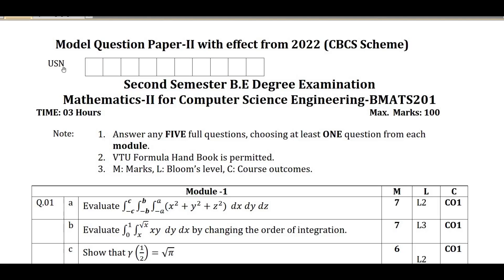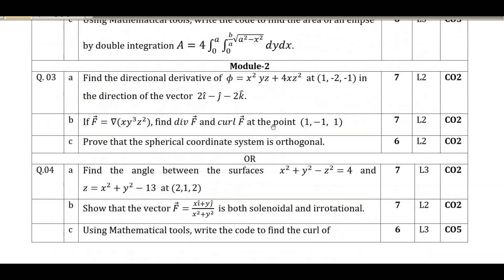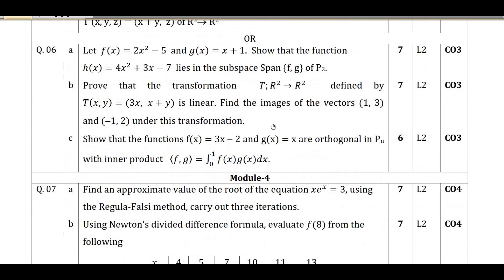Hello my dear students, I welcome you all for Sviki tutorials. In this video, I will be solving the solutions for model question paper 2 for the second semester BE degree examination. For the computer science stream, I have taken the subject code BMATS201. First of all, I will be starting with the common module for all streams, which is numerical method 1.